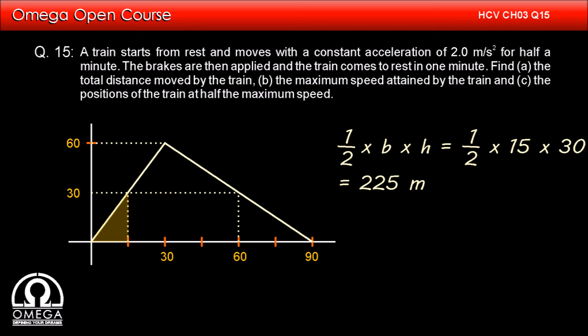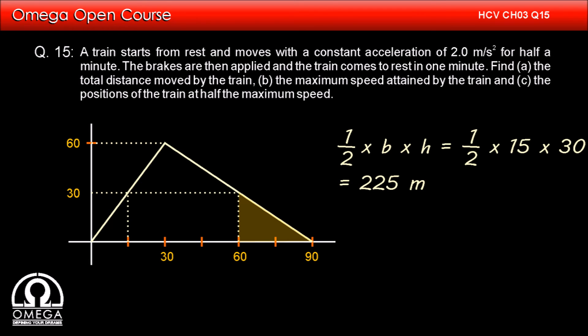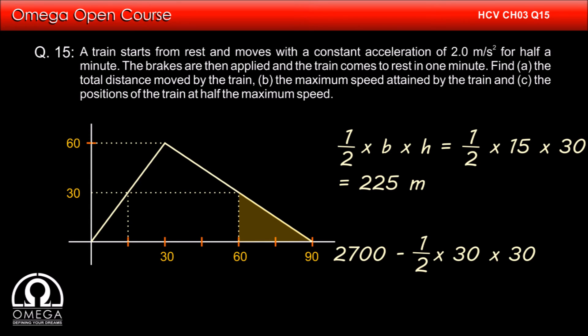At 60 seconds, the position of the train will be the area of the shaded region, which is same as the area of the entire triangle minus the area of this smaller triangle. We have already calculated the area of the entire triangle is 2700. So the required area is 2700 minus half × 30 × 30, that is 2250 meters, that is 2.25 kilometers. So the answer to part C is 225 meters and 2.25 kilometers.